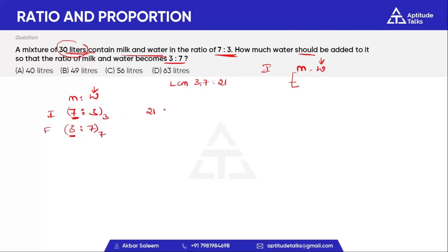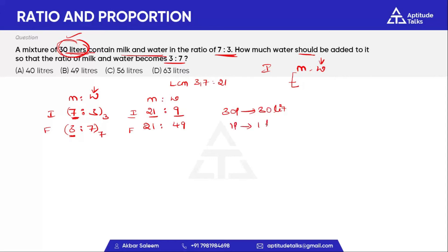So, three times seven is 21 and three times three is nine. Seven times seven is also involved. We have a milk and water ratio. This is the initial mixture and this is the final mixture. The initial total mixture ratio is 21 plus 9. The water starts at 9 parts. Now it becomes 48 parts total. 40 parts are done, and 1 part equals 1 liter, so 40 liters are done. Our answer is 40 liters — option A is correct.